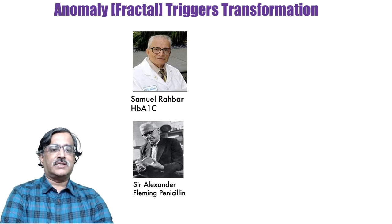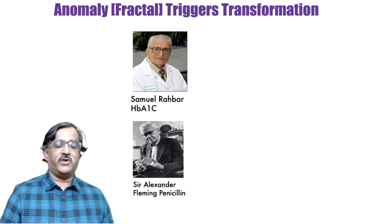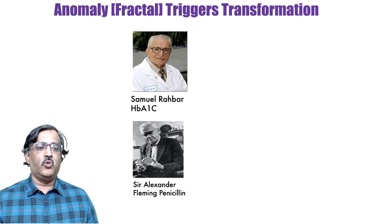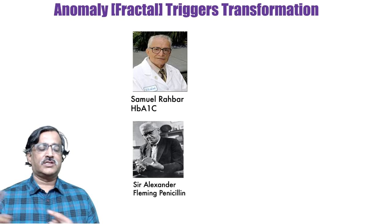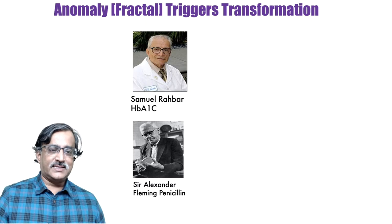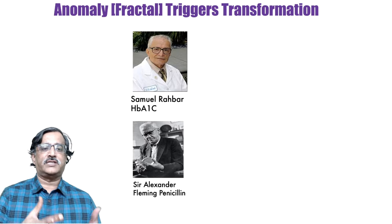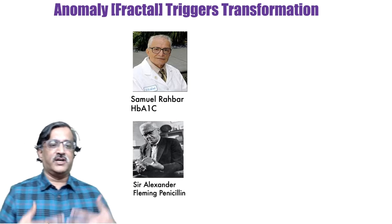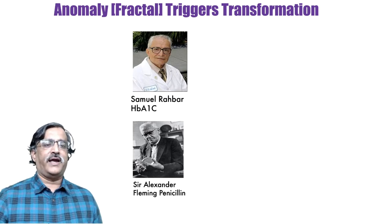Samuel Rabar, the Iranian scientist, was studying hemoglobin and looking for new types of hemoglobin. One day he observed a strange kind of hemoglobin in a woman's blood, and when he researched further, he noticed that the woman was a diabetic patient. After investigating, he discovered glycated hemoglobin, or HbA1c, which transformed diabetes management because for the first time it gives doctors the ability to look at a patient's sugar control for the prior three months.